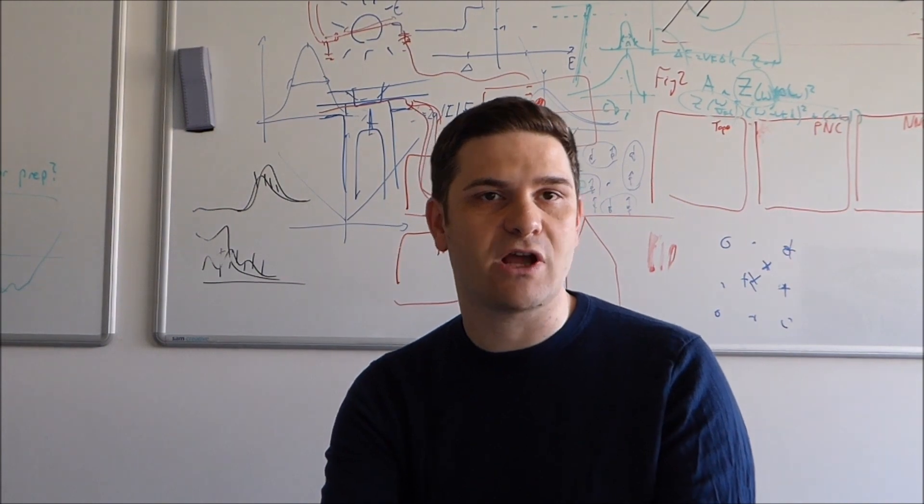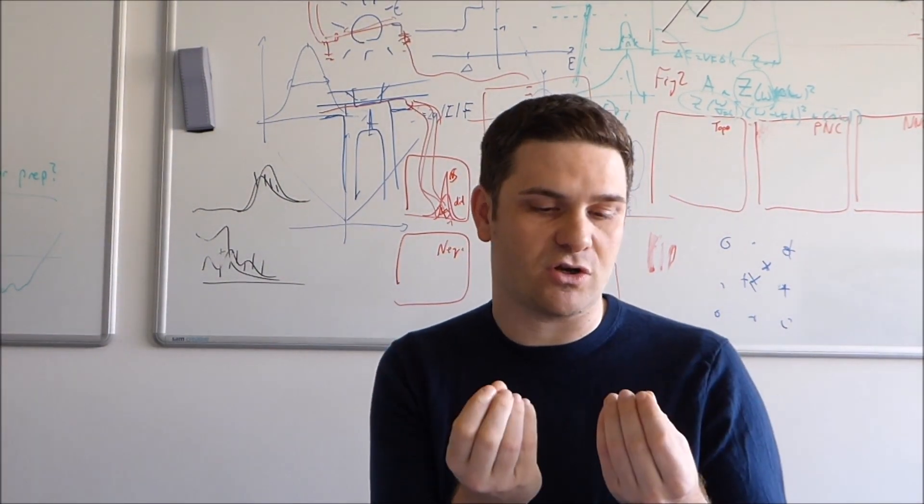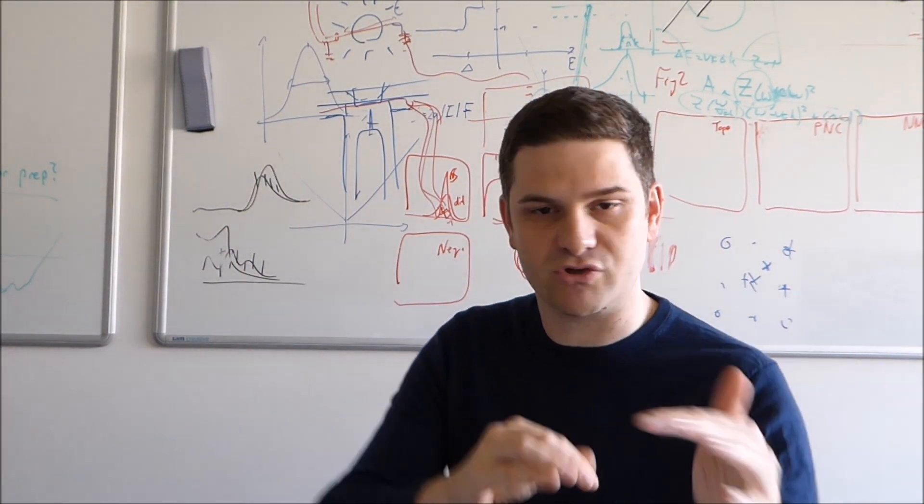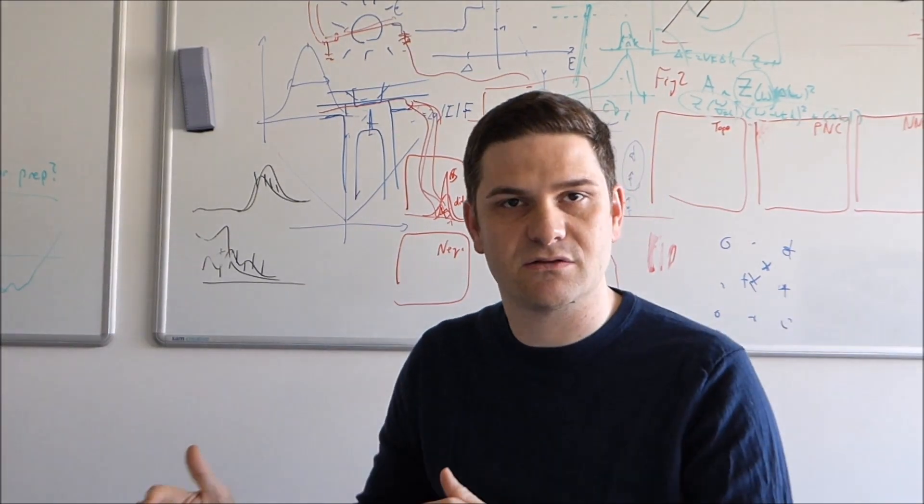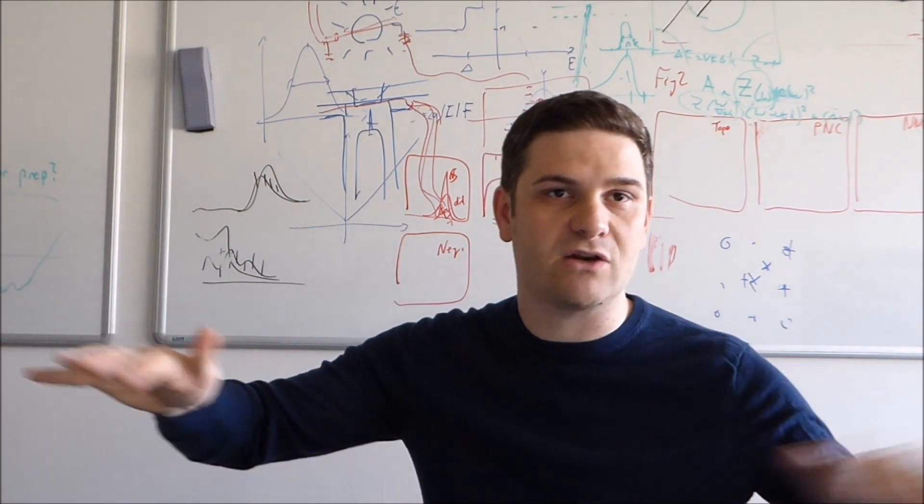Now what happens in a superconductor is that electrons, which usually repel each other because they are both negatively charged, form pairs - weird kind of pairs that overlap and are really big. And these pairs then condense. For what you used to have, these billions of electrons moving in complicated ways...